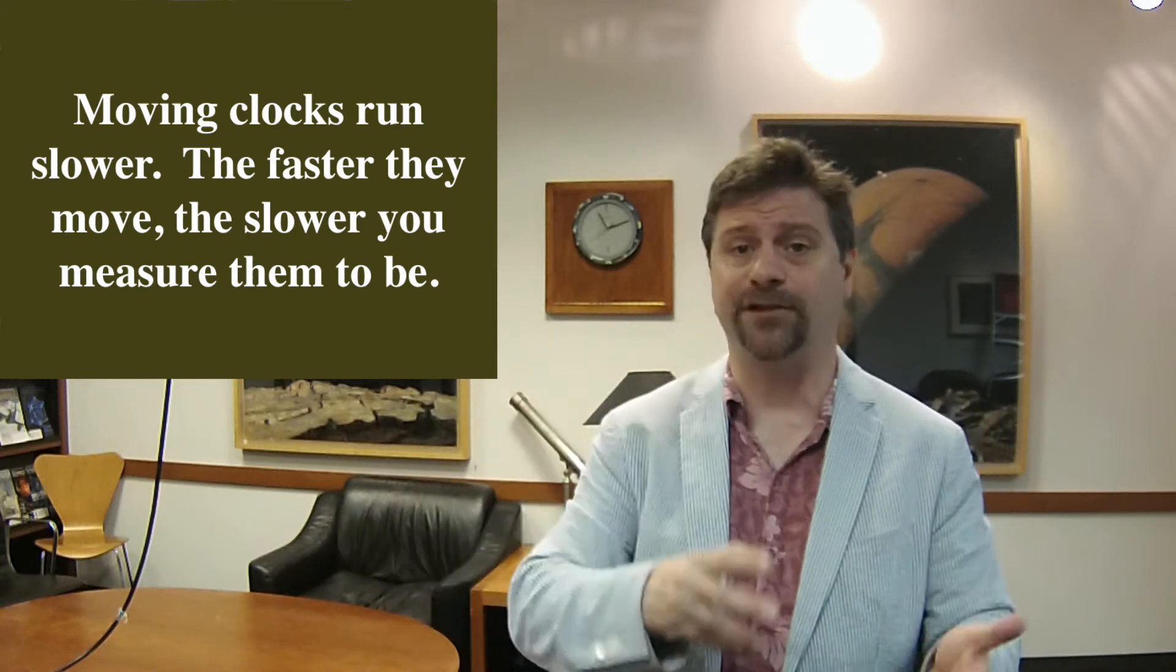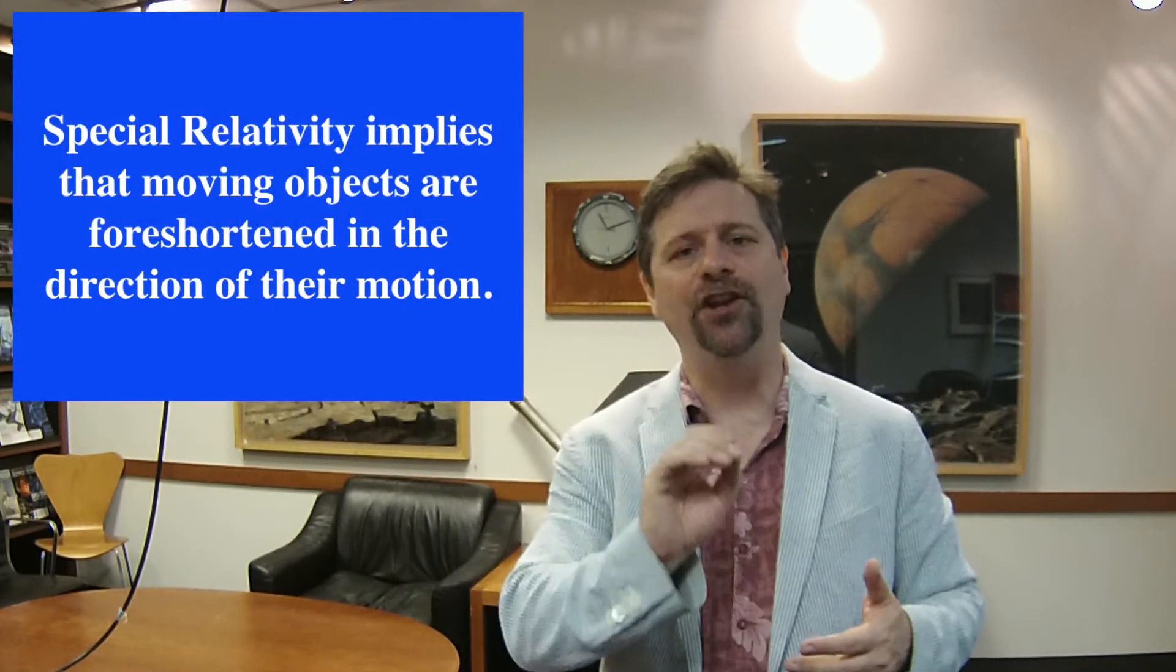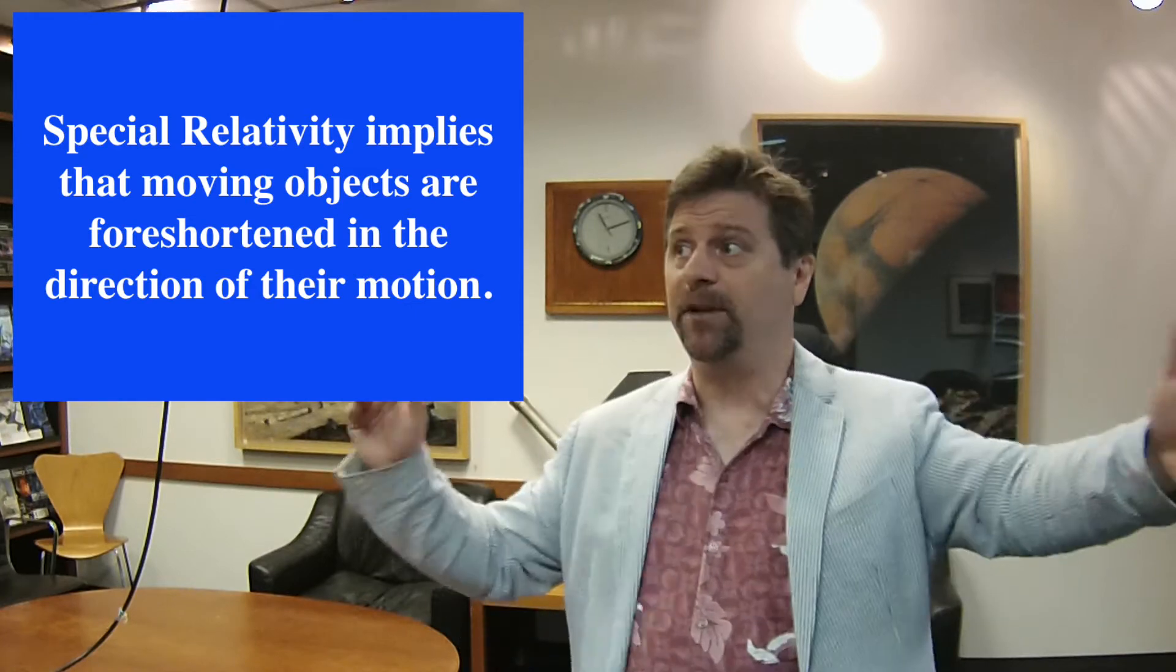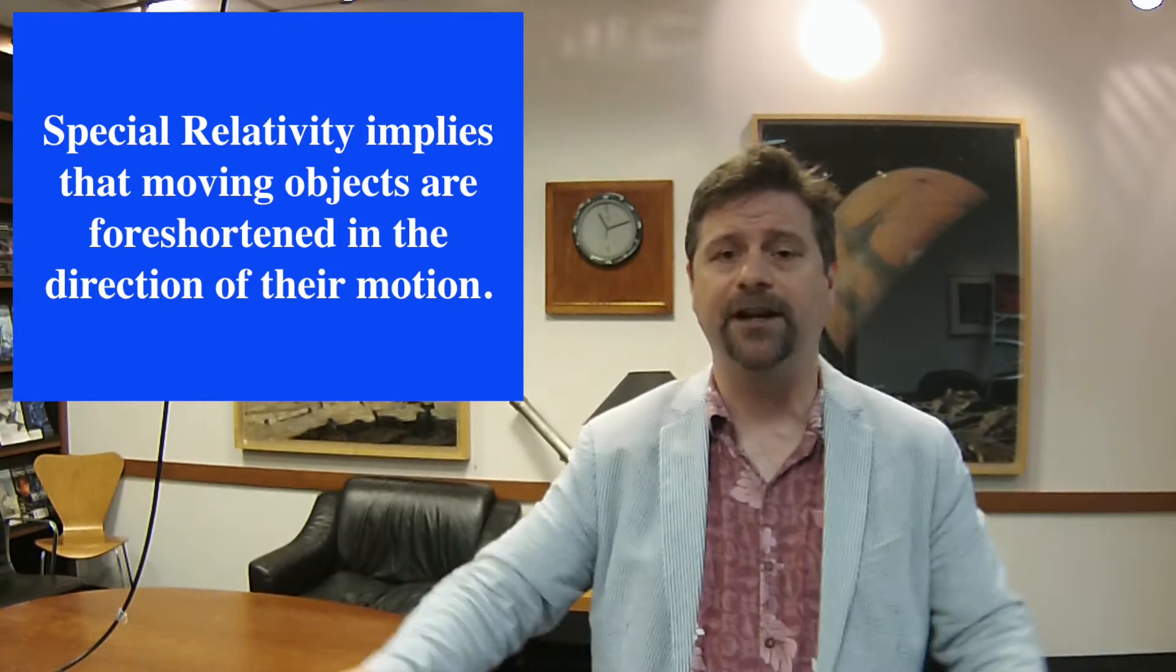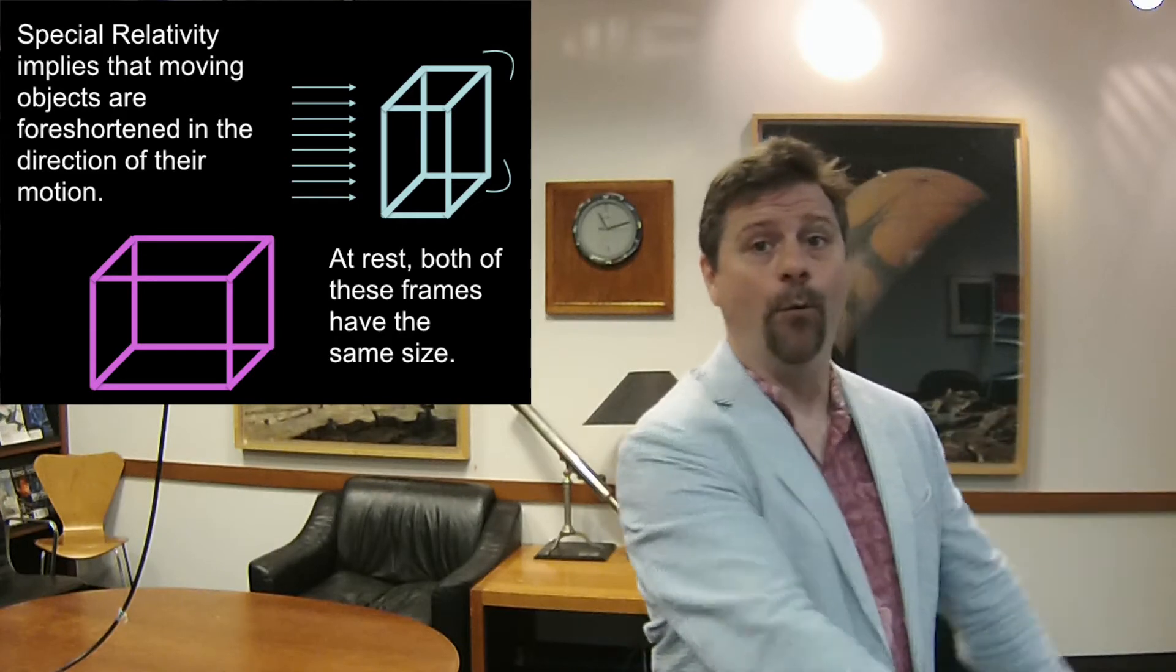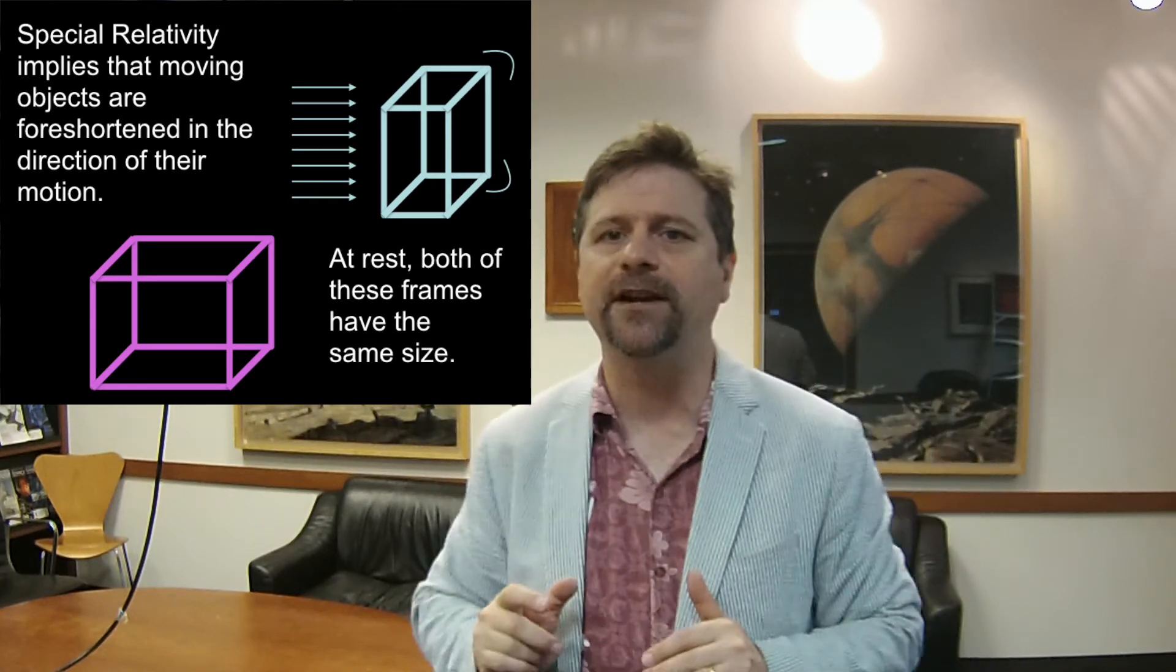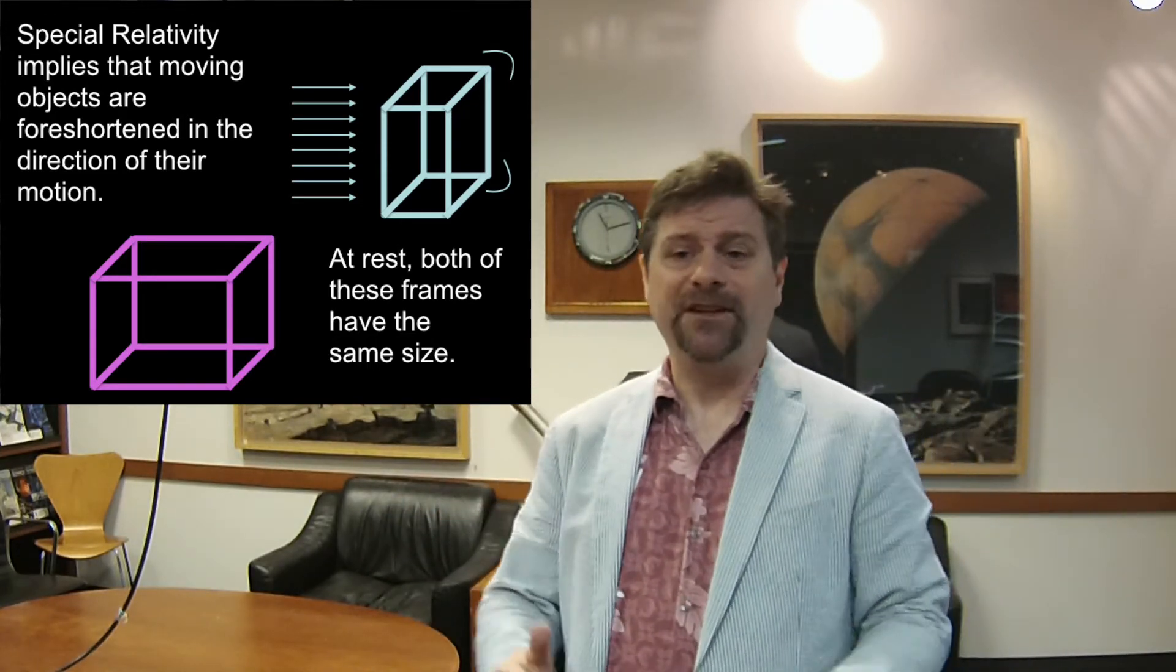The third thing is that moving objects are apparently foreshortened in the direction of their motion. That's a really weird one. Inside my inertial reference frame, I can lay down meter sticks either in the direction I'm moving or across the direction, up and down, backwards or forwards. I don't see the room being squished. The room is not being squished according to me because I'm in the inertial reference frame. In a different inertial reference frame outside watching me, they see the length of the room getting squished in the direction of motion. They see my clocks running slower and the room foreshortened.